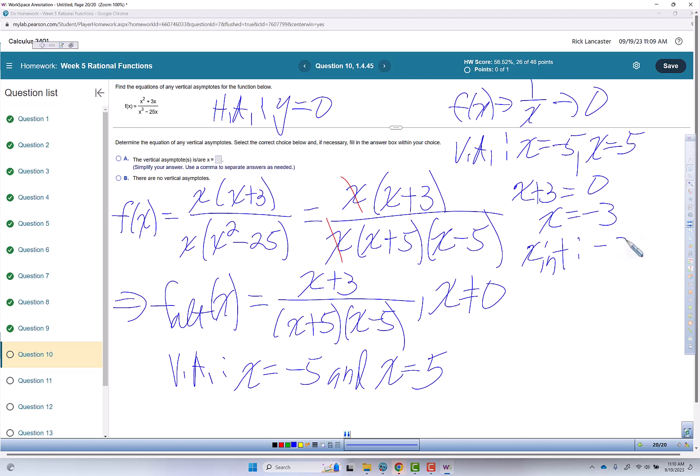And then our y-intercept, because we can never let x equals 0. So y-intercept, there is no y-intercept.